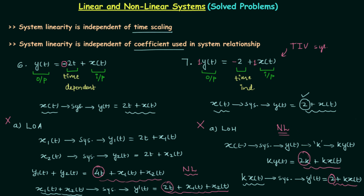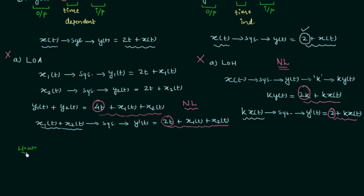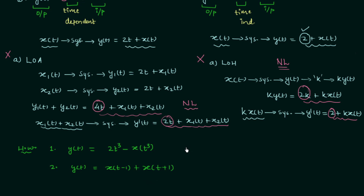So this is all for this lecture. Now we will move to our homework problems. There are two homework problems. In the first, y(t) = 2t³ − x(t)³. In the second, y(t) = x(t−1) + x(t+1). You need to tell me whether each system is linear or non-linear. Post your answers in the comment section. See you in the next one.